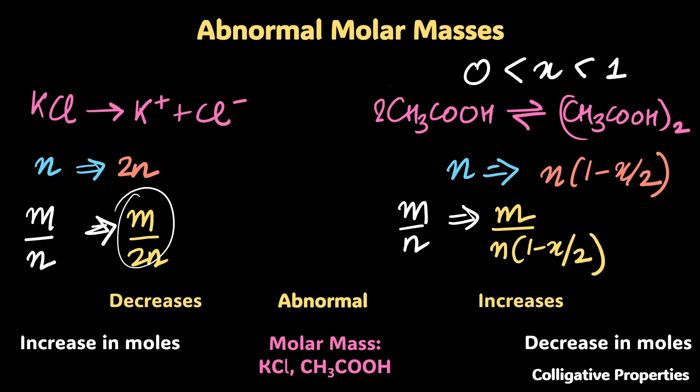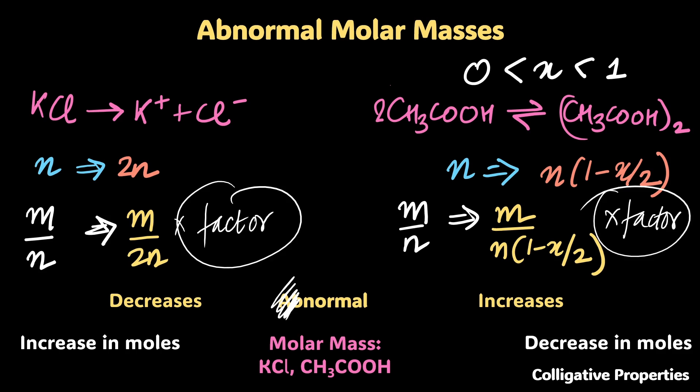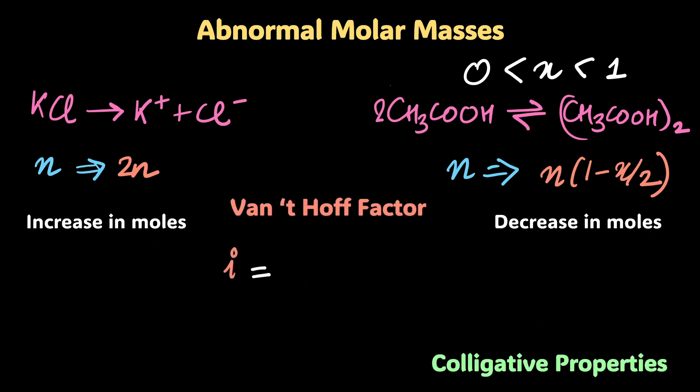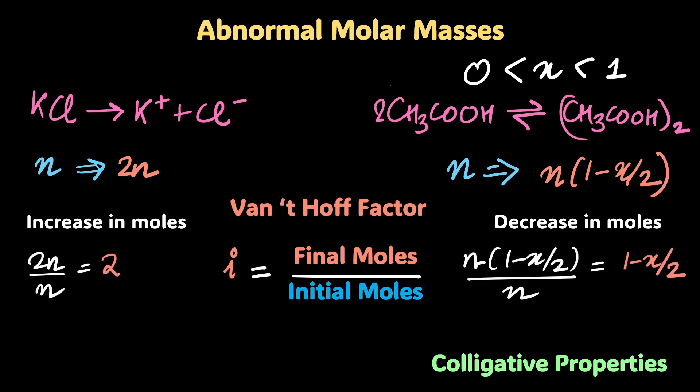So I need to multiply this with some factor to get back to the normal molar mass, and that's what we're going to do. This is abnormal - scratch out that 'ab' to get back to normal. I need to multiply it with that factor. This factor is known as the Van't Hoff factor. I don't know if you know this, but Van't Hoff was the first person to win a Nobel Prize in chemistry. You should read up on that - it's pretty interesting. Anyway, the factor that we're talking about is simply i, which is final moles divided by initial moles. So in this case it's going to be simply 2, and in this case is simply going to be 1-x/2.